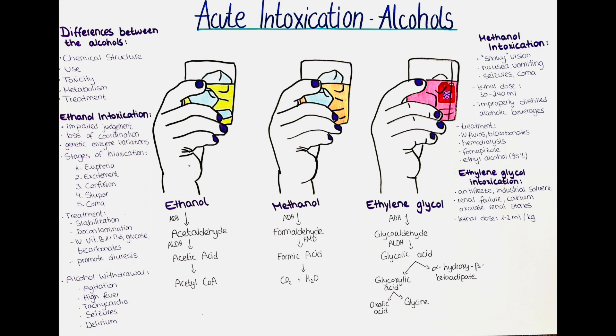Heavy or chronic alcohol consumption can lead to tolerance, meaning higher amounts of ethanol may be required to produce the same level of intoxication. The effects of ethanol can also be influenced by other factors such as the presence of food in the stomach, hydration status and the use of other drugs or medications. Therefore, it is difficult to provide a precise answer to the question of how much ethanol is needed for intoxication symptoms.